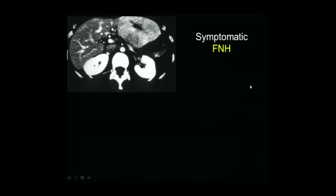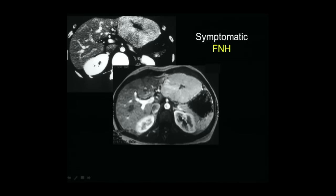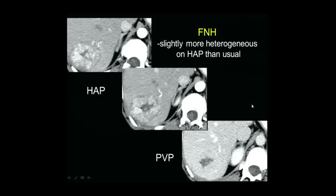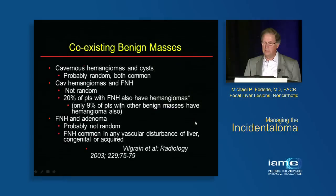Here's a young man with a symptomatic FNH — in my experience these are often symptomatic when hanging off the left lobe, in the epigastric region, where it gets compressed by seat belts and steering wheels. On MR, arterial phase enhances homogeneously; the central scar is bright on T2-weighted images — unlike fibrolamellar carcinoma, which we'll discuss shortly. Here's a slightly more heterogeneous lesion than usual but with the other criteria: hypervascular on arterial phase, central scar, mostly isodense to liver on portal venous phase, and a basket of draining veins into the hepatic veins.